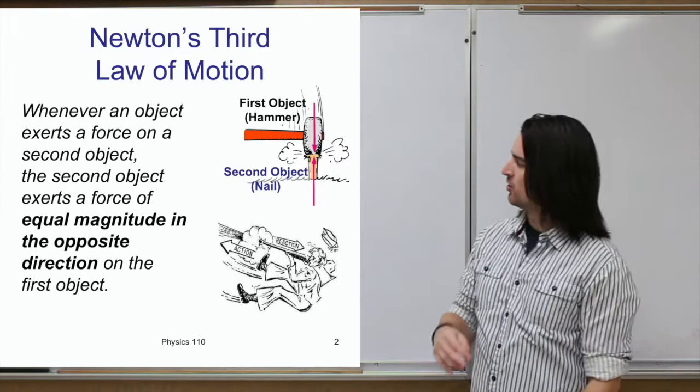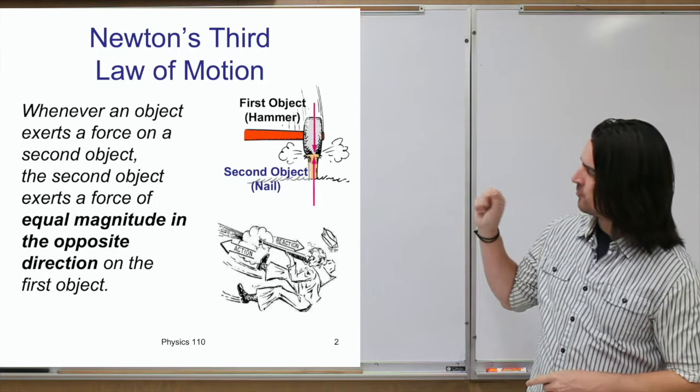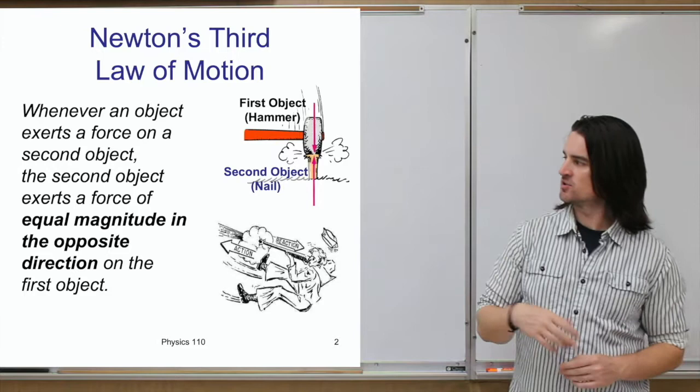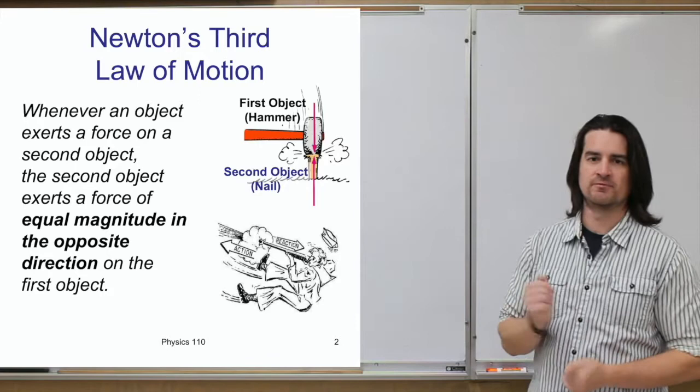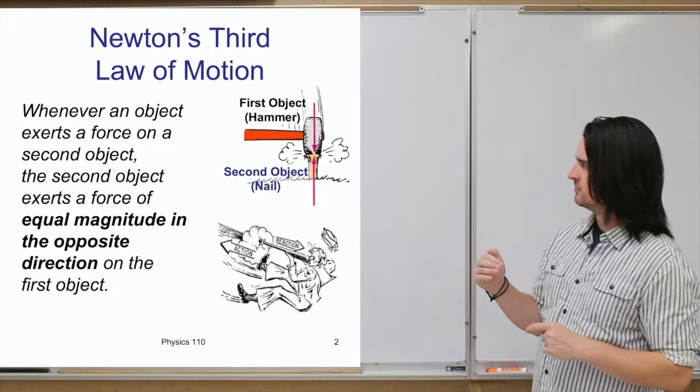A more detailed statement of Newton's Third Law would be something like this: whenever an object exerts a force on a second object, the second object exerts a force of equal magnitude in the opposite direction on the first object. It might be a little wordy, but it's easier to understand with some examples.